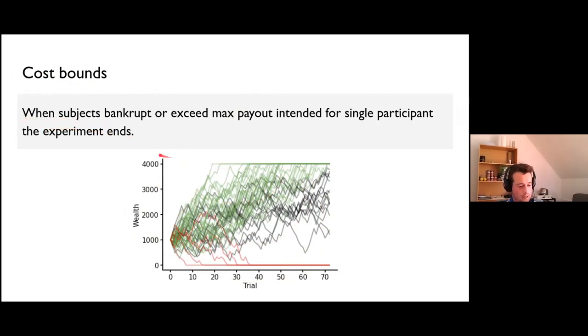We figured out a very simple solution which turns out to work very well with our next idea. We just said that when the subject goes bankrupt, so he hits zero wealth or exceeds some max payout that's intended for him, the experiment just ends. You can see these simulated wealth trajectories. Some of them are made until the end of the experiment, and some of them, the red ones, went bankrupt at some point and the experiment just ended there. It's similar for the green ones which exceeded 4,000 crowns.